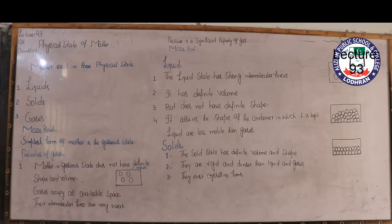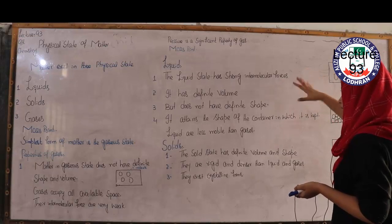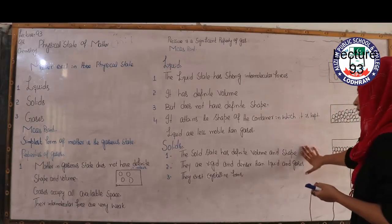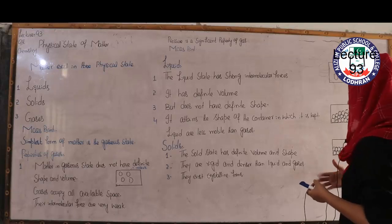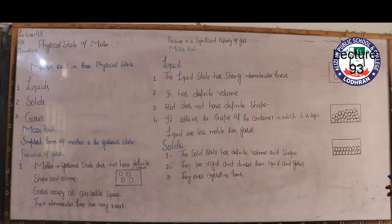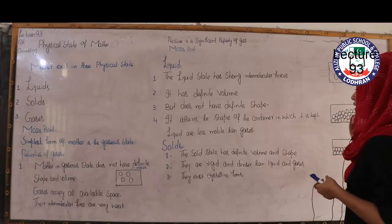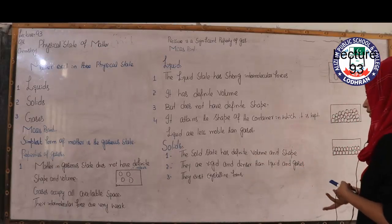The last state is solid. Examples include your door and your window — they exist in a solid state. The solid state has a definite volume and a definite shape. Solids are harder and denser as compared to liquid and gaseous states. They are rigid, hard, and dense, and if you heat solid states, they can also come into a crystallite form.